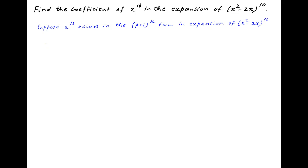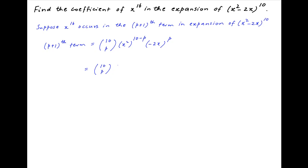Now the (p+1)th term is equal to 10 choose p, multiplied by x² raised to the power (10 minus p), multiplied by (minus 2x) raised to the power p. This is equal to 10 choose p, multiplied by x raised to the power (20 minus 2p), multiplied by (minus 2) raised to the power p, multiplied by x raised to the power p.